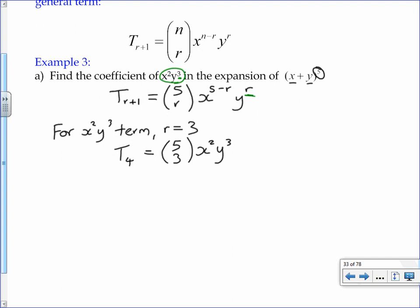I'm just confirming that indeed r equals 3 does give me x squared y cubed. Which means that if I want to do 5 choose 3, that's got the value of 10, so that gives me 10x squared y cubed. So the fourth term in our expansion, without having to write it all out, is 10x squared y cubed.